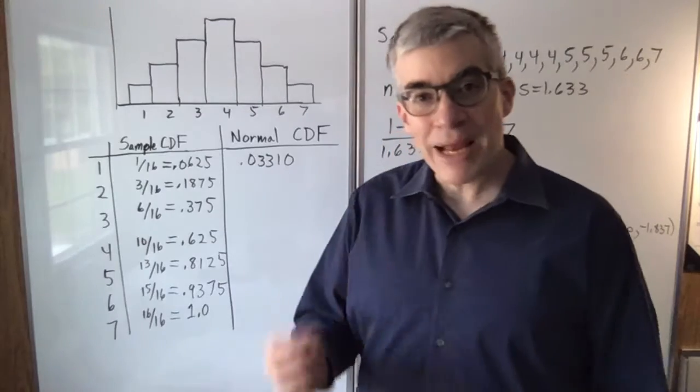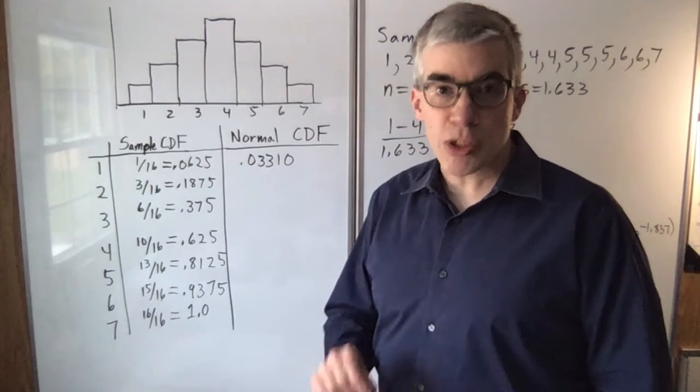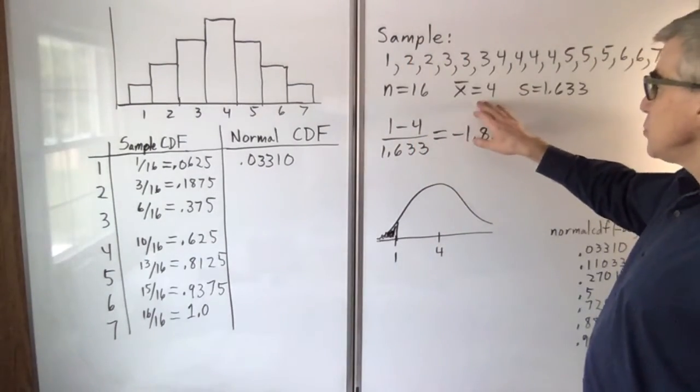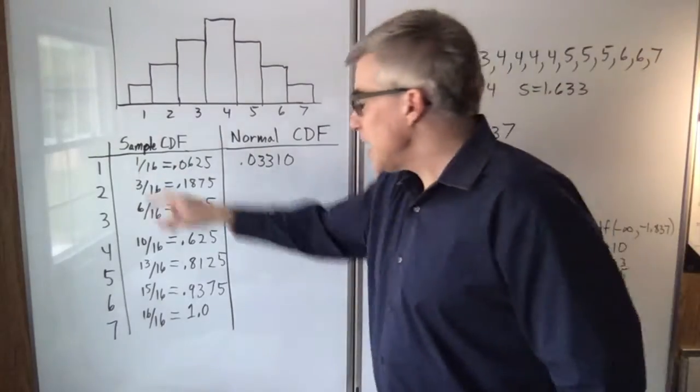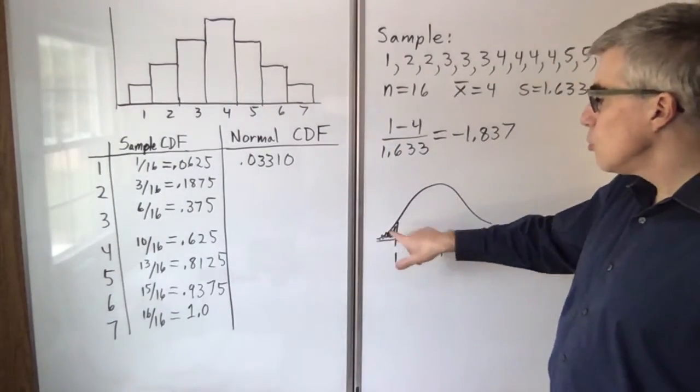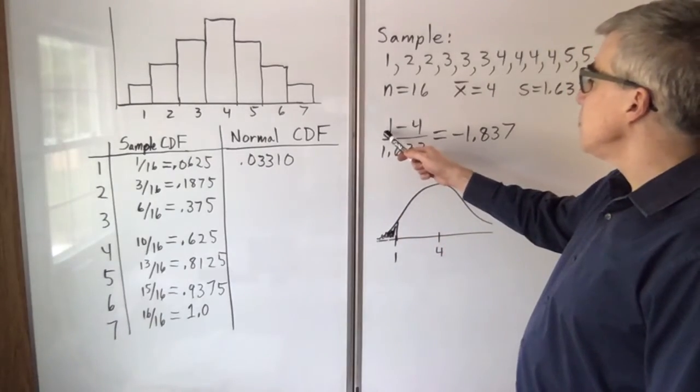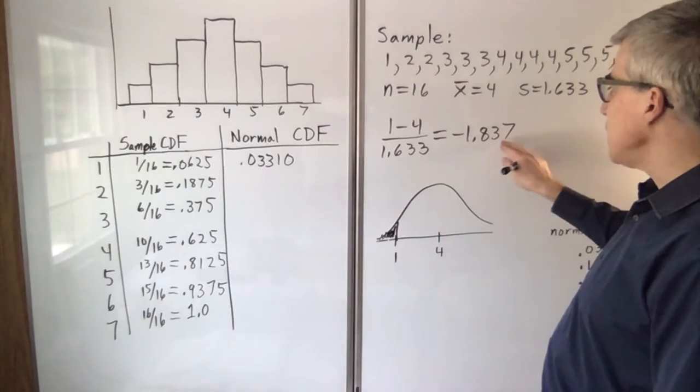Now for comparison, we need what the normal CDF would predict for those same raw scores. So using a normal distribution with a mean of 4 and taking the data point 1, we want to know what that area is. We convert to a z-score: the value minus the mean over the standard deviation, we get negative 1.837.